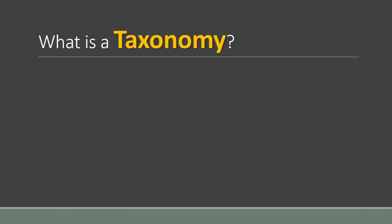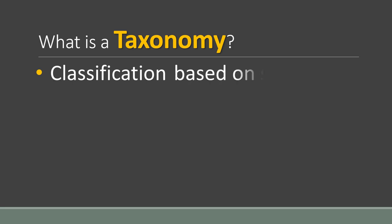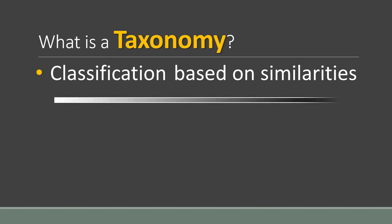What is a taxonomy? Simply put, it is a classification of something—naming, describing, and organizing things into groups based on similarities. In the case of Hofstede's taxonomies, the classification is based on a scale.